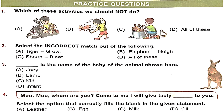Option B, a boy hurting an animal, is not okay. Option C: the boy is bathing an animal — that is good. Option D: all of these. The right answer is B, because we should not hurt animals — we should be kind to them.